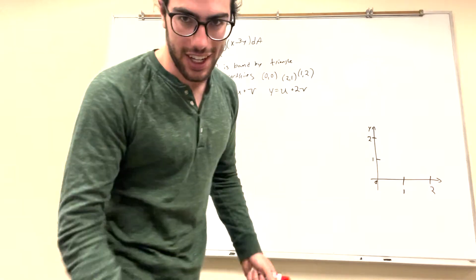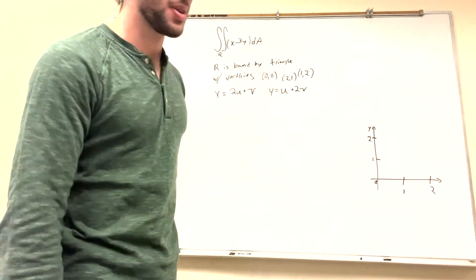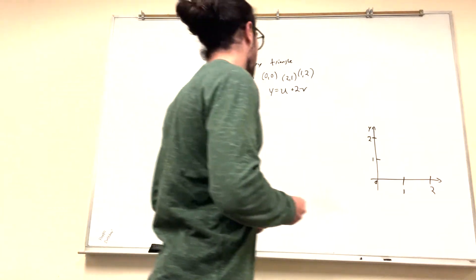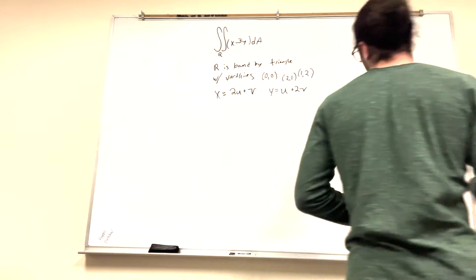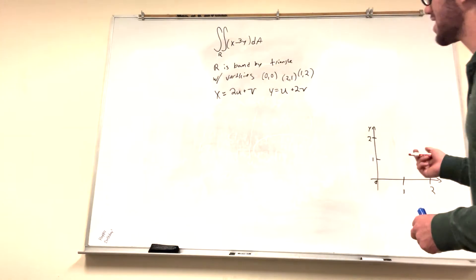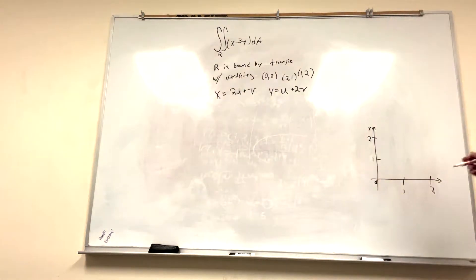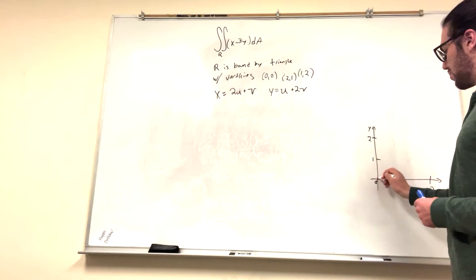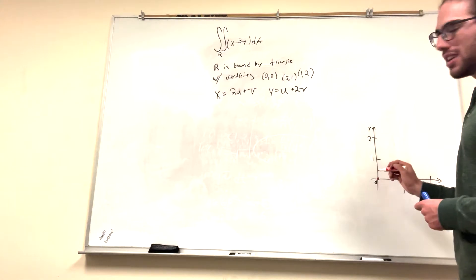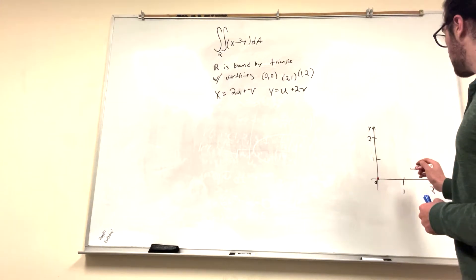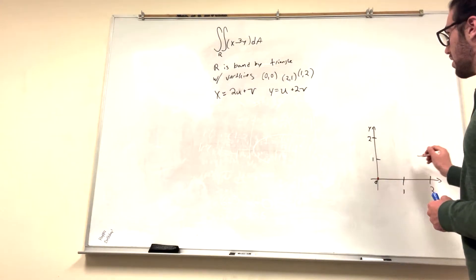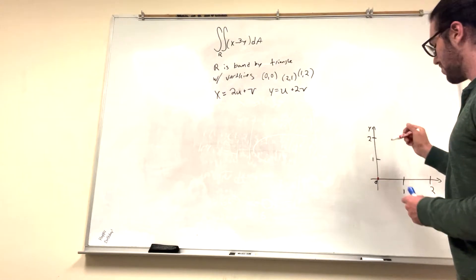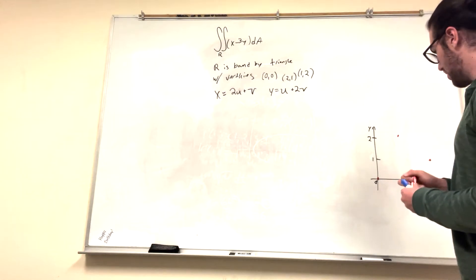So what you want to do when you ever get a double integral, triple integral, anything — you really just want to graph it out. Unless you have the vertices given, which you do here. So we have (0,0) — boom — (2,1), and (1,2) — boom — and you can see a triangle.